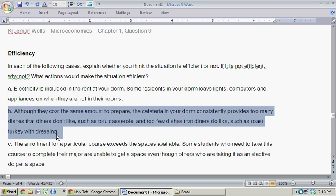So, this is clearly an example of an inefficiency. If the dining hall simply decreased the number of dishes that people didn't want, or weren't that popular, and increased the number of dishes that people did want, people would be better off. And by doing that, no one would be worse off. So, there's room for efficiency. And there's some situation out there that's the same amount of cost to all diners where more people are happier.